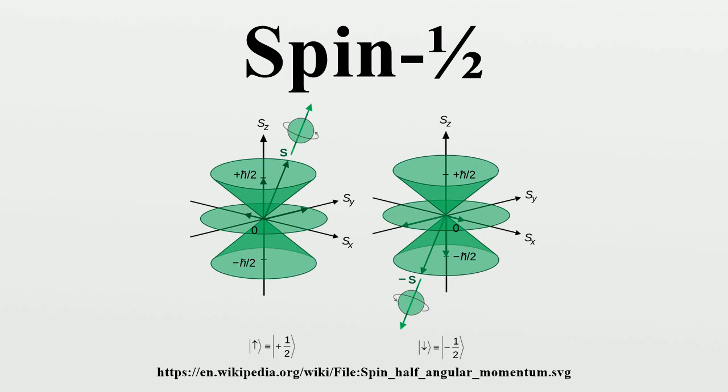Note that these values for angular momentum are functions only of the reduced Planck constant, with no dependence on mass or charge. The necessity of introducing half-integral spin goes back experimentally to the results of the Stern-Gerlach experiment.